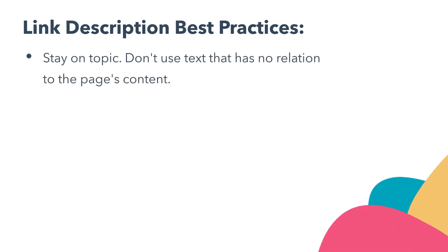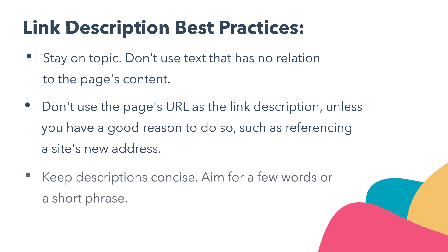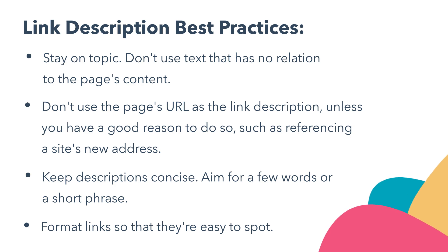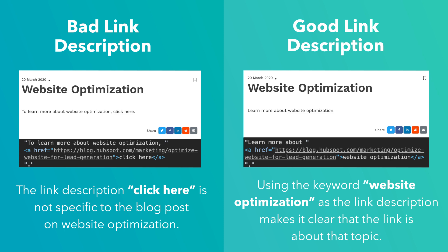First, stay on topic — don't use text that has no relation to the page's content. Don't use page URLs as a link description, unless you have a very good reason to do so, such as referencing a site's new address. Keep descriptions concise — aim for a few words or a short phrase. And format links so that they're easy to spot. On the left, you see a bad link description: click here is not specific to the blog post on website optimization. On the right, there's a good link description — using the keyword website optimization makes it clear that the link is about that topic. Replacing click here with website optimization is a much better experience. It's a small change, but this effort really impacts your page's ranking and experience.